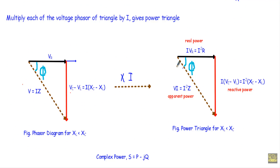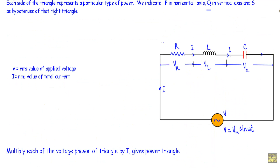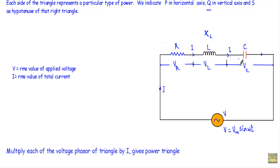Let's say I have a series RLC circuit with resistor R connected in series with inductance L and capacitance C. We apply an alternating voltage V equal to Vm sine omega-t. The RMS value of the applied voltage is V and the RMS value of the total current in the circuit is I.